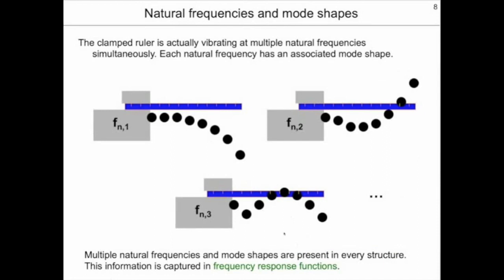In reality, our ruler is vibrating at multiple natural frequencies simultaneously. Each one of these natural frequencies has a particular shape associated with it, or mode shape. In the top left figure, we see the first natural frequency for this clamped ruler. In the top right figure, we see the second natural frequency, and we see that it has a different shape as it deflects. In the bottom figure, we see the third natural frequency vibration and its corresponding mode shape. These multiple natural frequencies and mode shapes are present in every structure, including our tool, holder, spindle, machine combination, and this information is captured in frequency response functions.